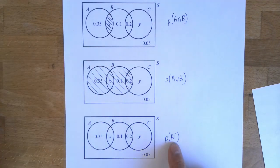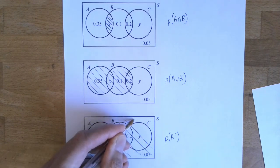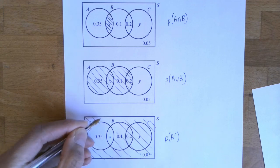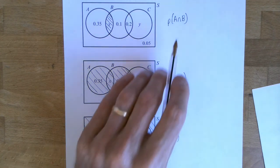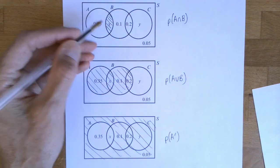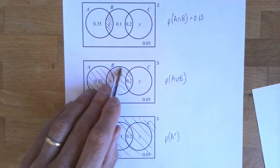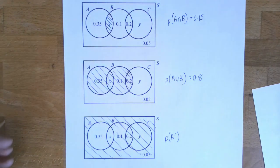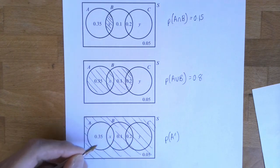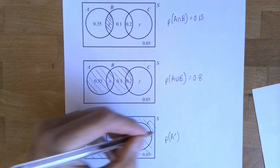This notation here means everything that is not in A — everything there including outside the circles. The probability of A intersection B is x, which we worked out was 0.15. A union B: probability of B was 0.45, added to 0.35 is 0.8. The probability of A — since x is 0.15 — adds up to a half.